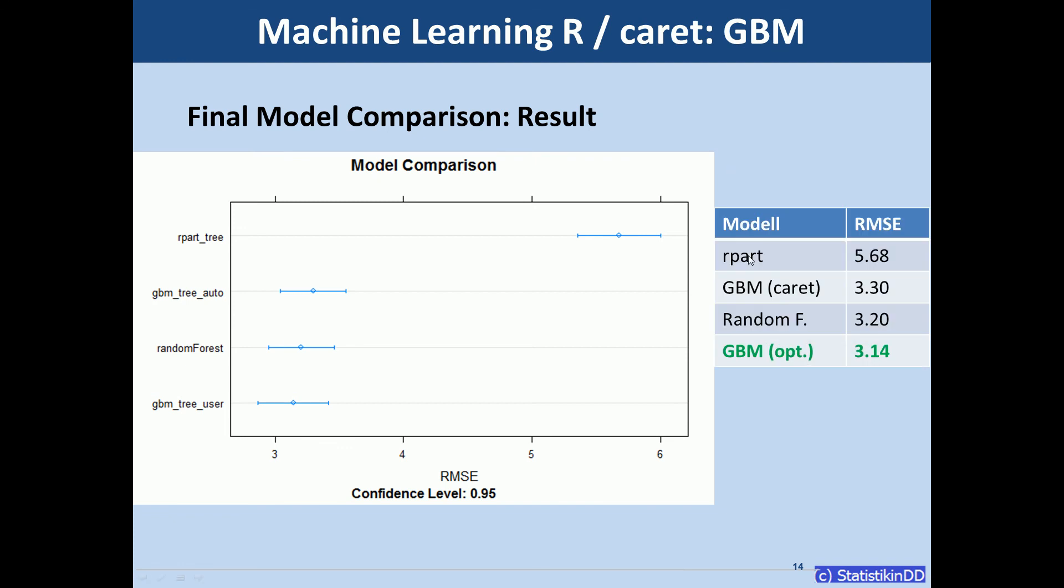And here finally we look at the actual numbers. So the root mean squared error of our gradient boosting machine came down to 3.14 from 3.30. And it has now overtaken the random forest model.